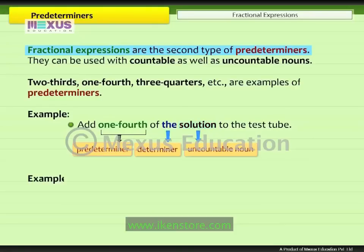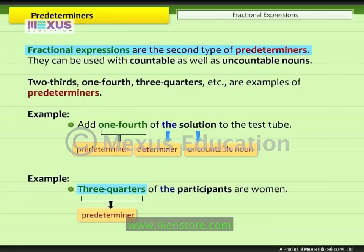Similarly, in the example 'three-quarters of the participants are women,' the fractional expression 'three-quarters' is the predeterminer. It comes before the determiner 'the' and is used with the countable noun 'participants.'